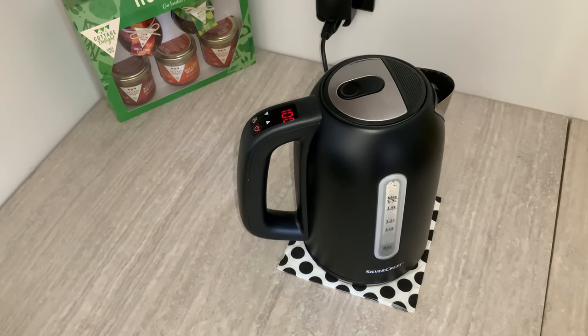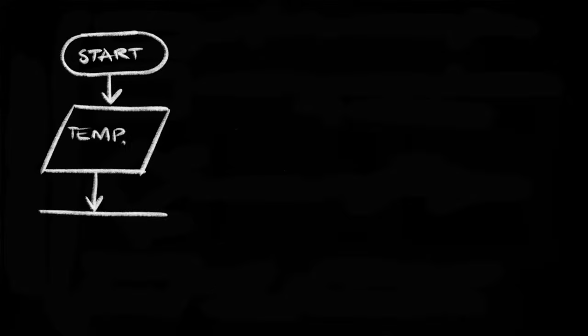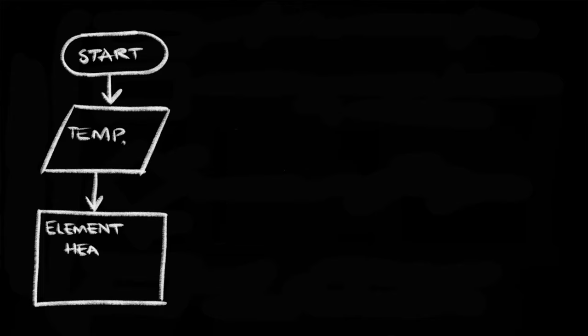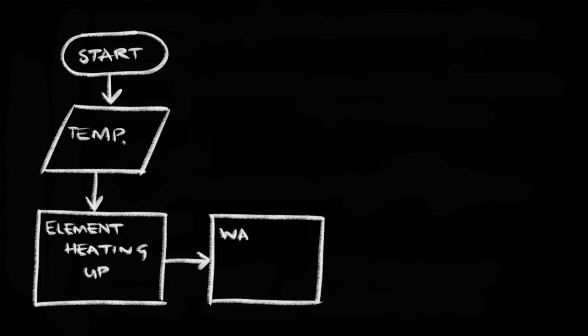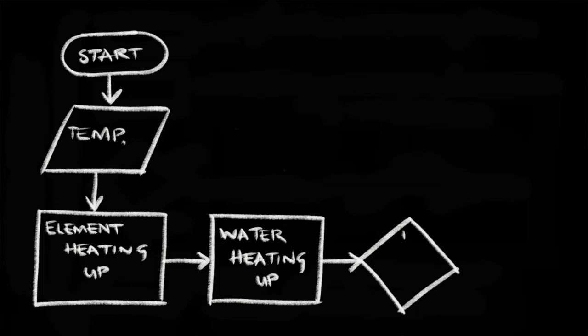We first need to open the flowchart with a start. The next step is setting up the temperature — as we are pressing the button to put in the temperature, that is an input, and so we need an input shape. The heating element is now starting to heat up, so this is a process, as an action is taking place but without our input or output. The water is starting to heat up as a result of the heating element, so this is another process. The thermostat is now reading the temperature of the water and must make a yes or no decision — the question being: is the water up to temperature?